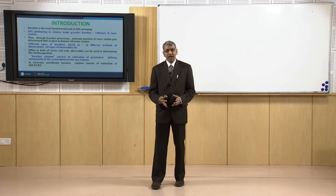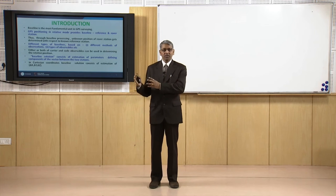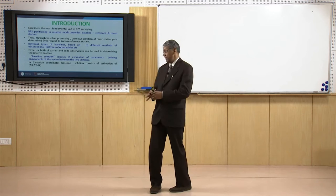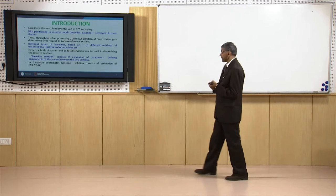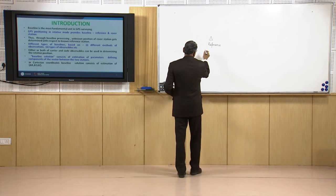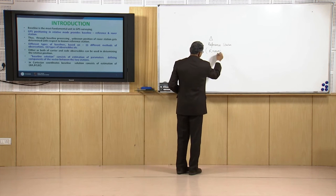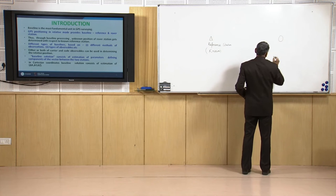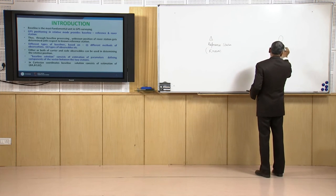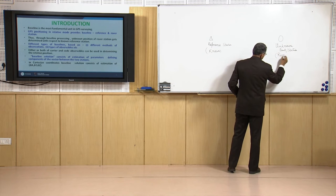What is a baseline? A baseline is a line joining two stations. One station is known as the reference station, that means the known point station, and the other station is called the rover station — the station whose position is to be determined.